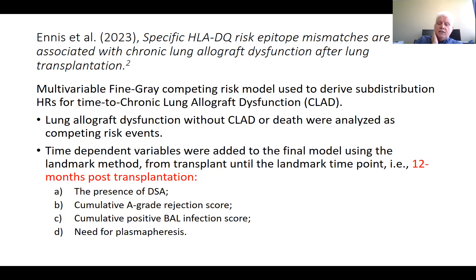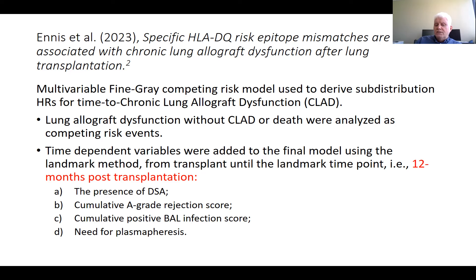Anis and others, in a recently accepted AJT manuscript, looked at specific HLA-DQ risk epitope mismatches and their association with chronic lung allograft dysfunction after lung transplant. In one of their analyses, they used a multivariable Fine-Gray competing risk model to derive sub-distribution hazard ratios for time-to-chronic lung allograft dysfunction. Lung allograft dysfunction without CLAD or death were analyzed as competing risk events. They used a landmark approach where time-dependent variables were added to the final model from transplant until the landmark time point — that is, 12 months post-transplant. The time-dependent variables included were the presence of DSA, cumulative A-grade rejection score, cumulative positive BAL infection score, and need for plasmapheresis.